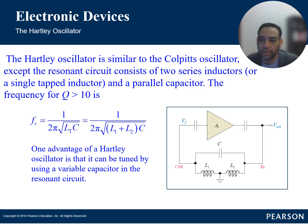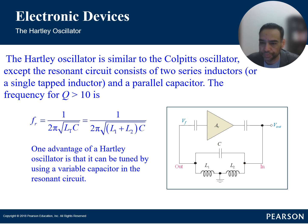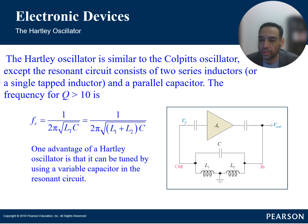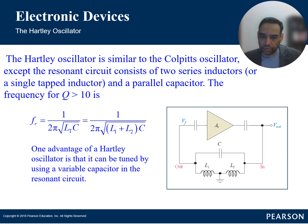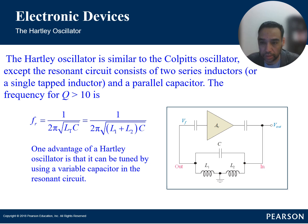The Hartley oscillator works with a tank circuit composed of two inductors and a capacitor — or a center-tapped inductor — to determine the resonant frequency. The feedback network passes a portion of the amplified output through the tank circuit. The inductor acts as a voltage divider and provides the necessary phase shift for positive feedback. The amplification stage compensates for losses in the tank circuit with the two inductors and capacitor.